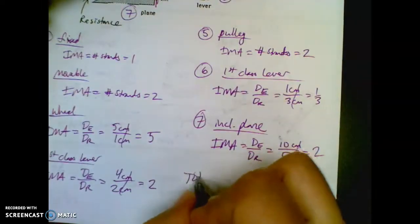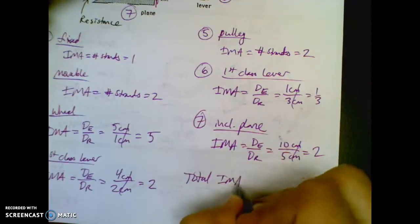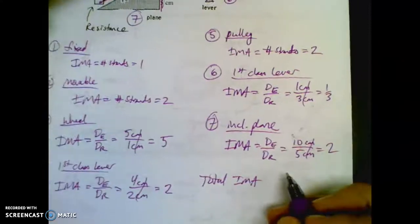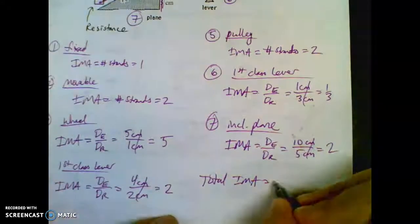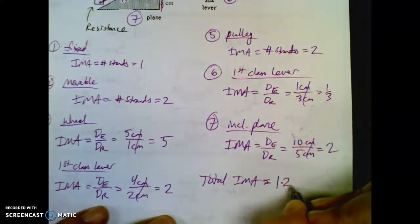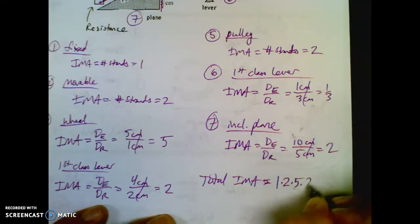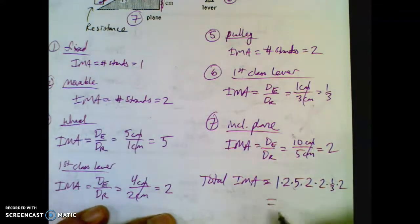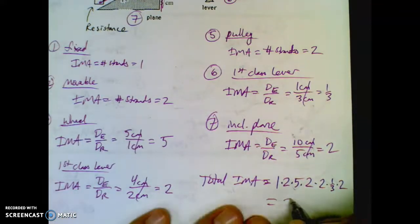Your total IMA is to take each one of these and multiply it together. So that's one times two times five times two times two times one third times two, which comes to a grand total of 26.6 repeating.